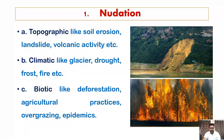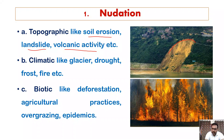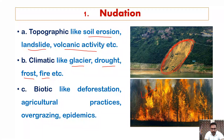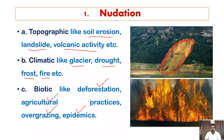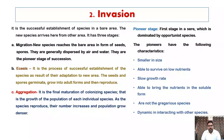Elaborating on nudation: it can be topographic, such as soil erosion, landslide, or volcanic activity, resulting in total nudation of an area. Climatic factors such as glacier, drought, frost, and fire may also be responsible for nudation. Besides these, certain biotic factors can also be the root cause, such as deforestation, agricultural practices, overgrazing, and epidemics. So nudation can be topographic, climatic, or biotic.